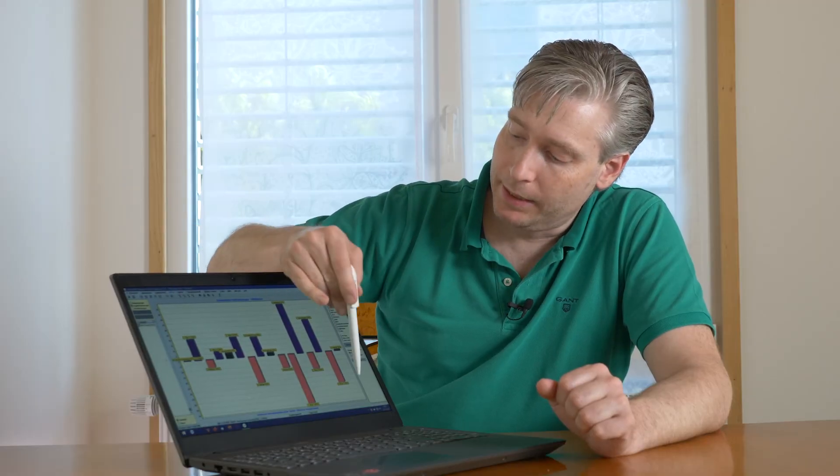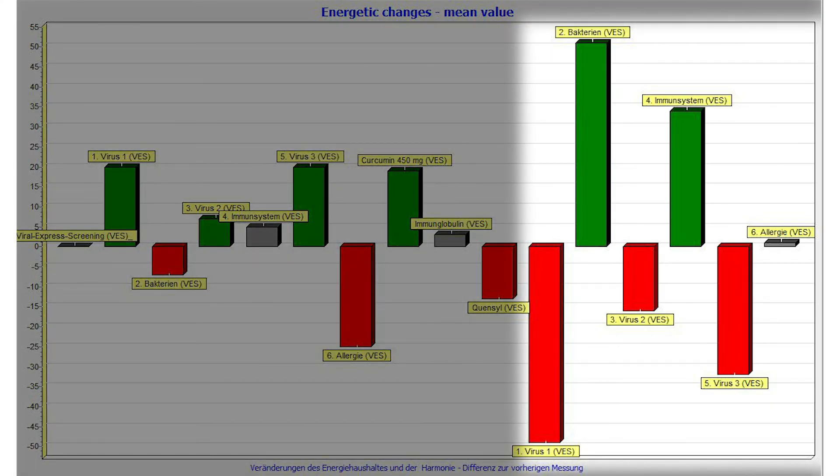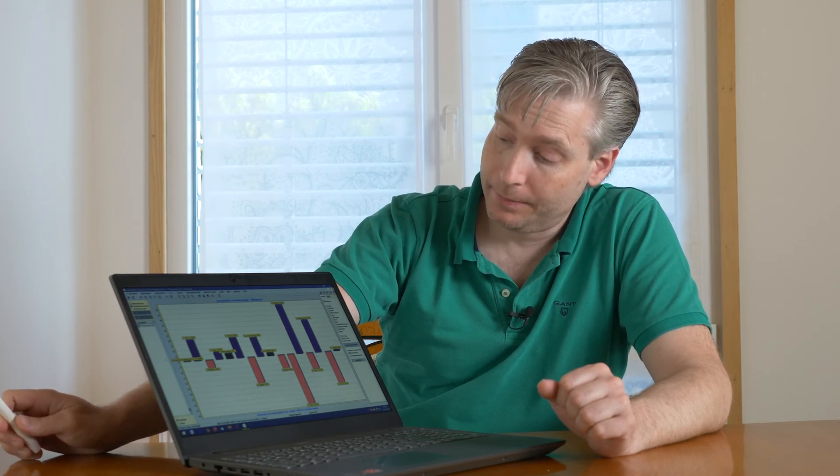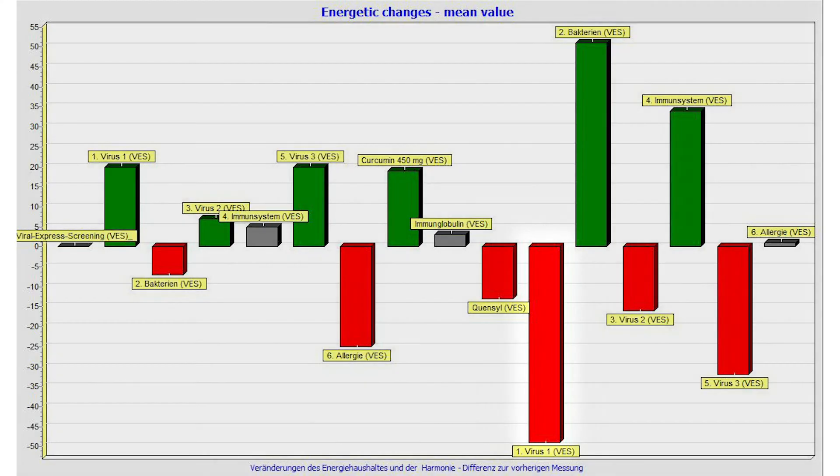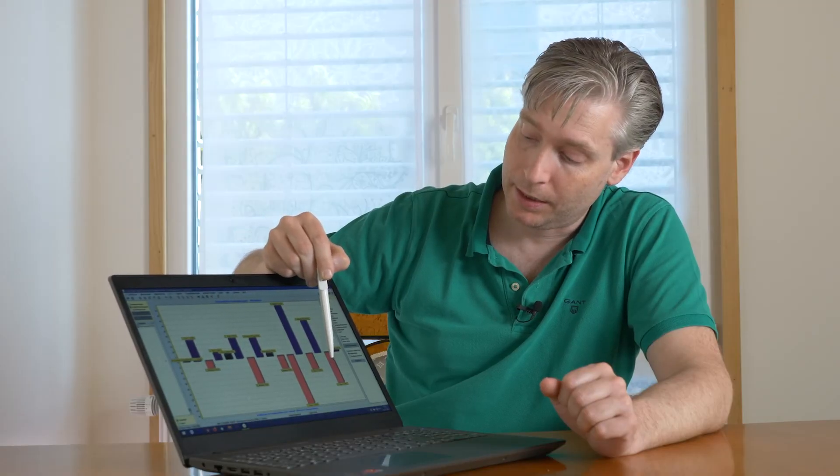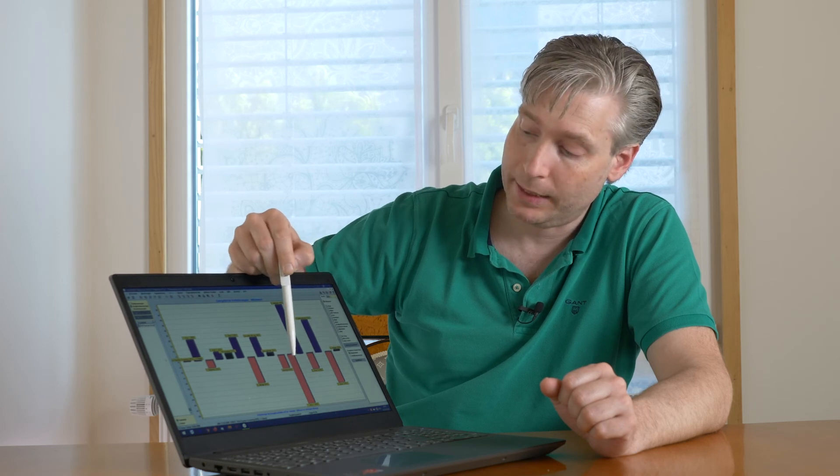This measurement here was done about 14 days after treating the young man with curcumin. He felt better, really better. And as you can see, all bars representing viruses - Influenza, Epstein-Barr and SARS-CoV-2 - are red and clearly below the baseline. So that means the virus problem is obviously solved. But now we have to concentrate on a possible bacterial problem.